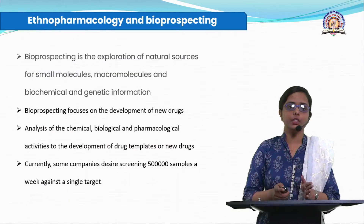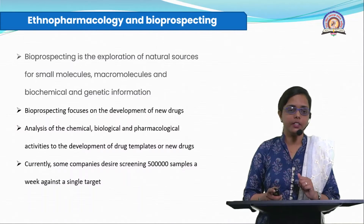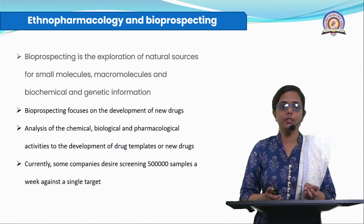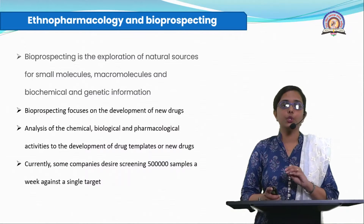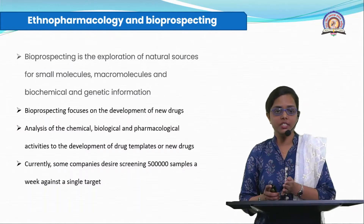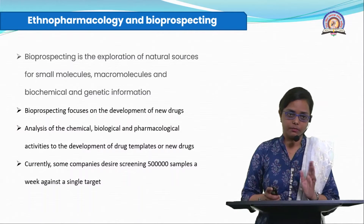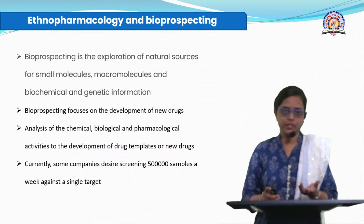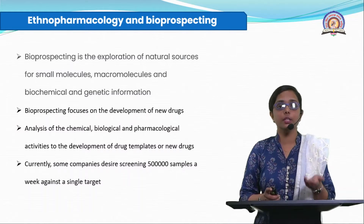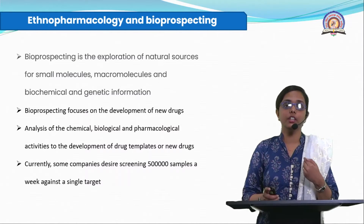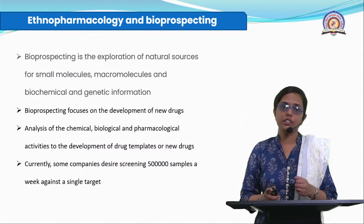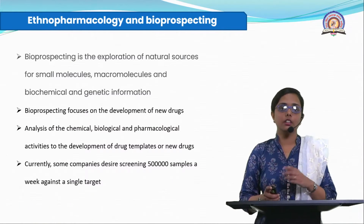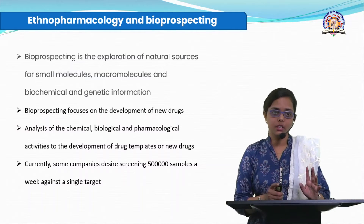Now we study ethno-pharmacology and bioprospecting. Bioprospecting is the exploration of natural or biological sources for small molecules, macromolecules, and biochemical and genetic information — studying what is naturally available and how we can use it in modern science. In the view of ethno-pharmacology, bioprospecting focuses on development of new drugs. Bacteria and viruses are getting resistant to current antibiotics and antivirals day by day, so we need new antibiotics and antiviral agents from plants against which these organisms are not yet resistant.